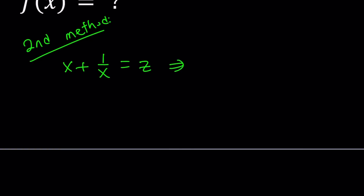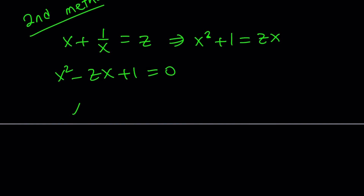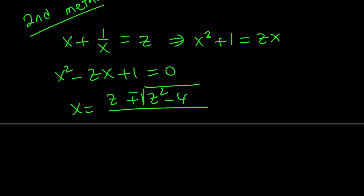And then from here I get the following. Multiply both sides by x: x squared plus 1 equals zx, and then put everything on the same side and you'll get a quadratic equation. By using the quadratic formula, we can easily solve this: negative b plus or minus the square root of b squared minus 4ac, where a is 1, divided by 2a. So that is the x value in terms of z.